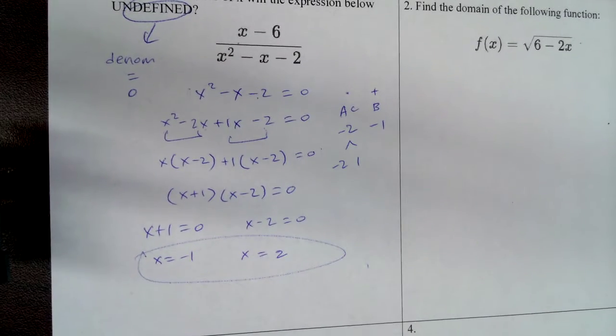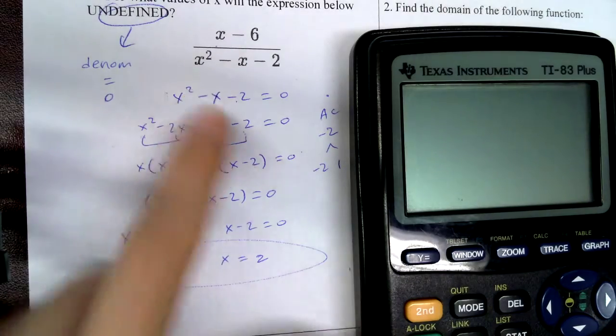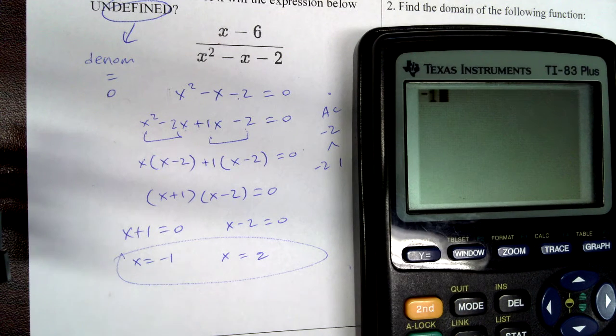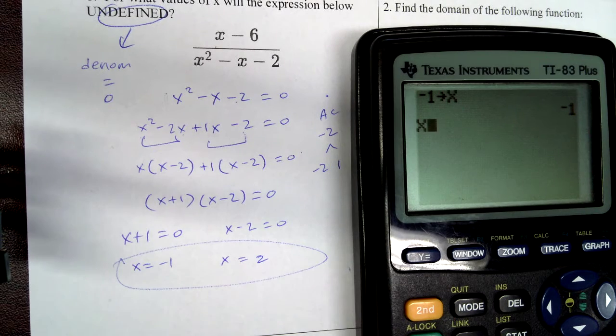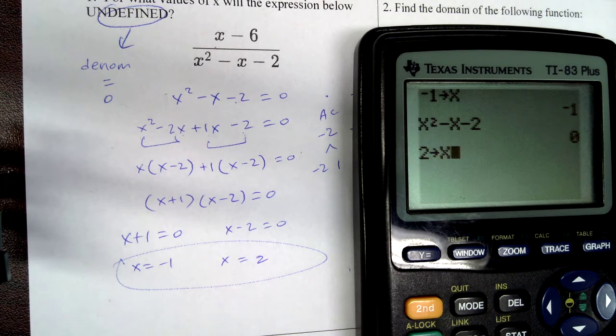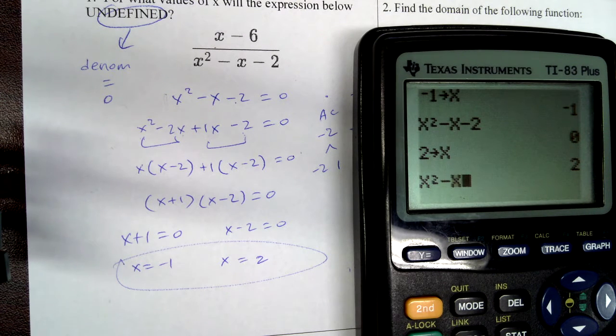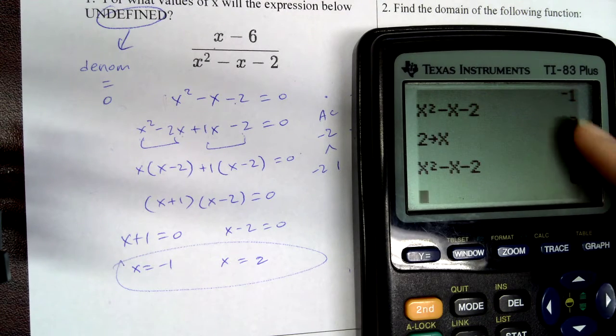So we have just figured out that when x is equal to negative 1 or x is equal to 2, we're going to have a zero in the denominator. I want to just show you that that is true by saying negative 1, store x, enter, and typing in the denominator. Let's try 2, store x, enter, enter, so we do end up with zero in the denominator.